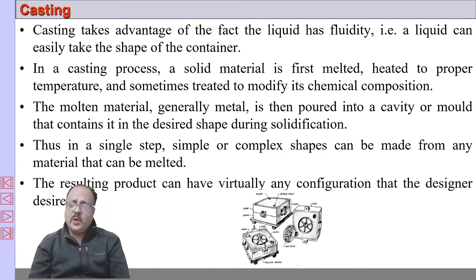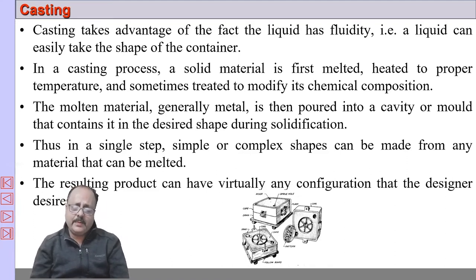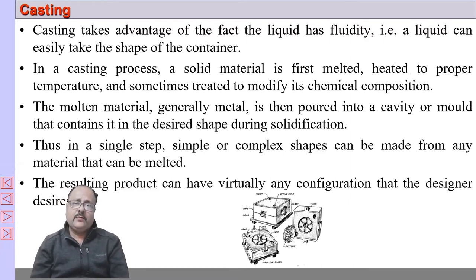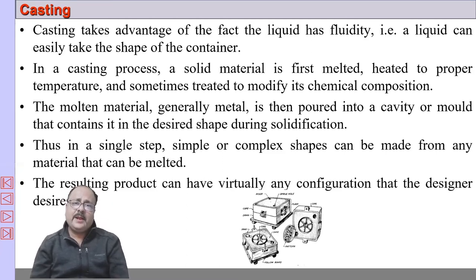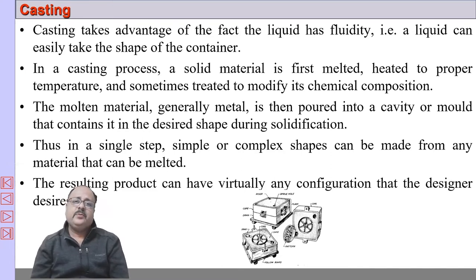If there are no other limitations, that is the primary criteria. There are also other parameters like the material property required, the quantity required, accuracy, and surface finish. But the main parameter that decides the selection of casting process is the complexity of the product.